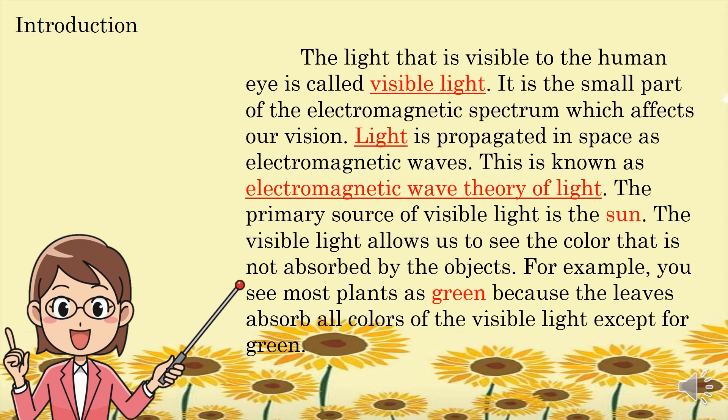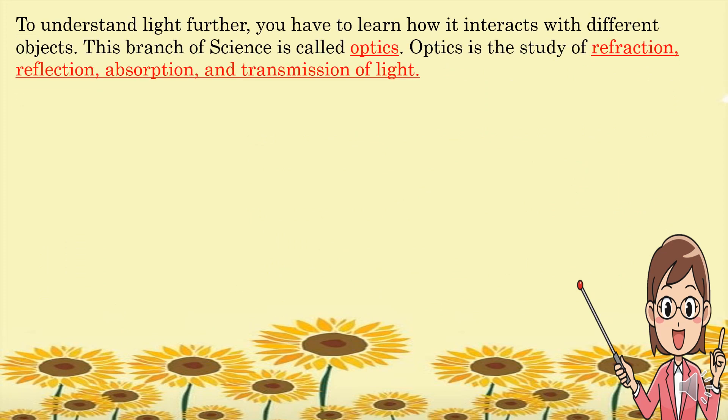The visible light allows us to see the color that is not absorbed by objects. For example, you see most plants as green because the leaves absorb all colors of the visible light except for green. To understand light further, you have to learn how it interacts with different objects.